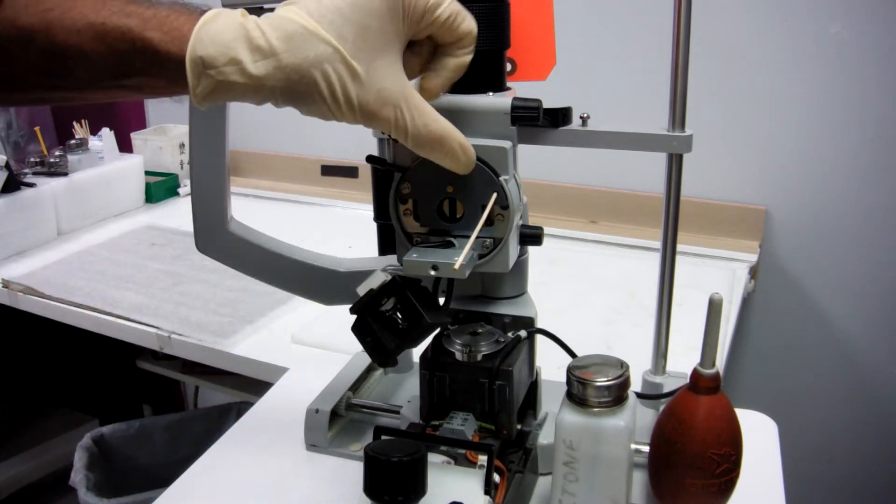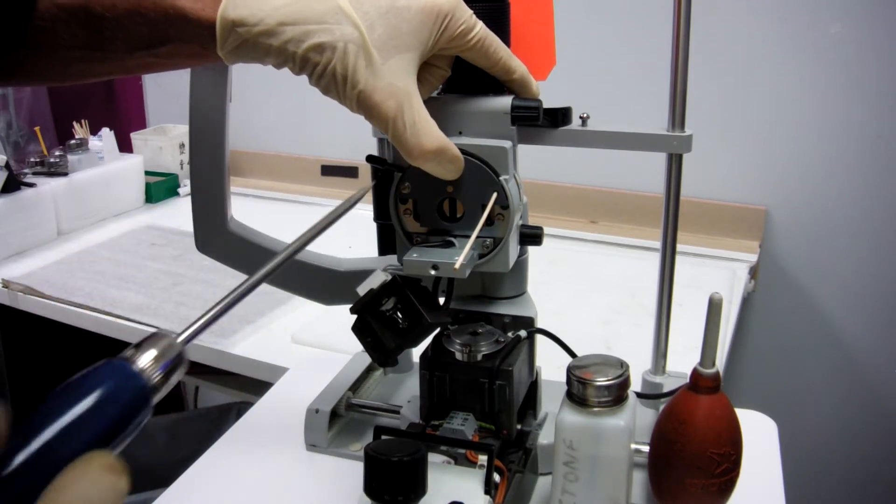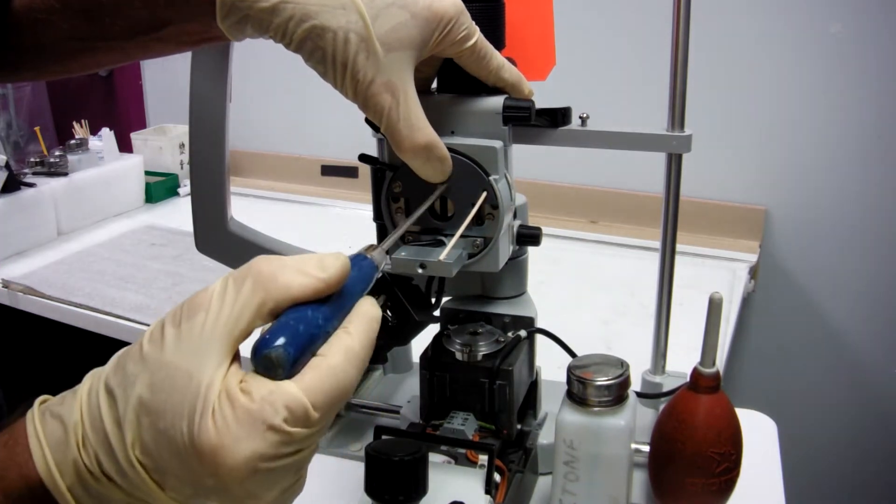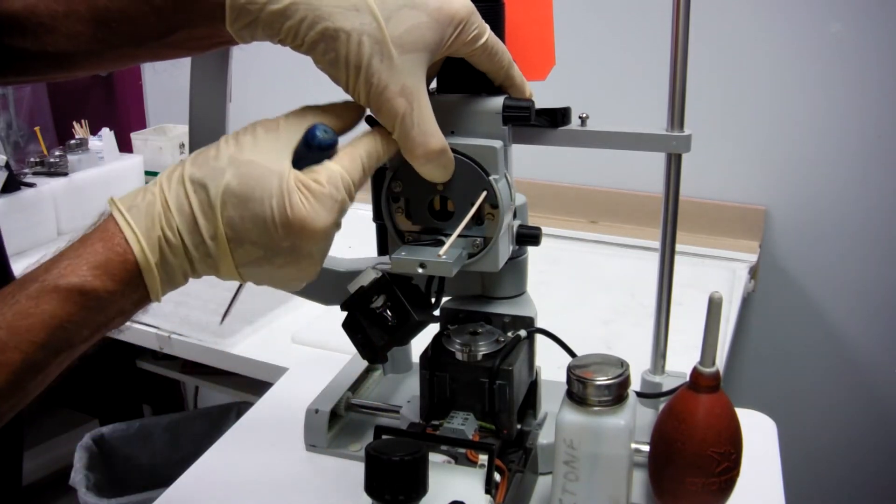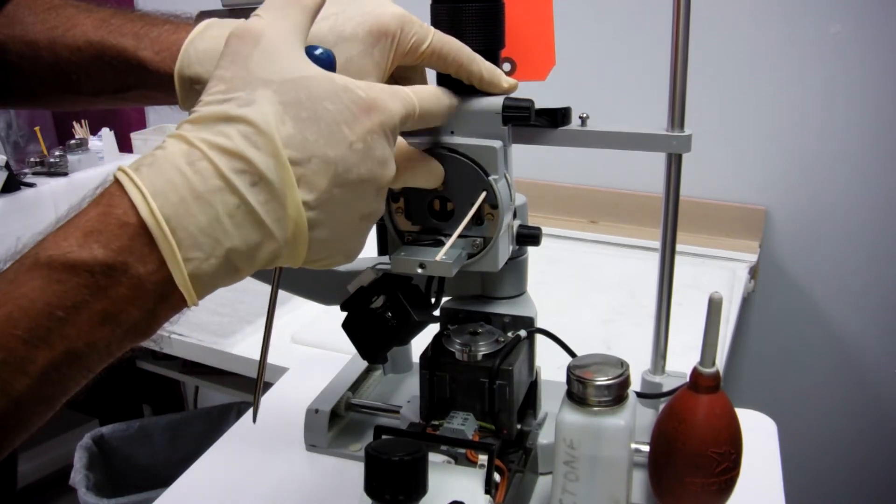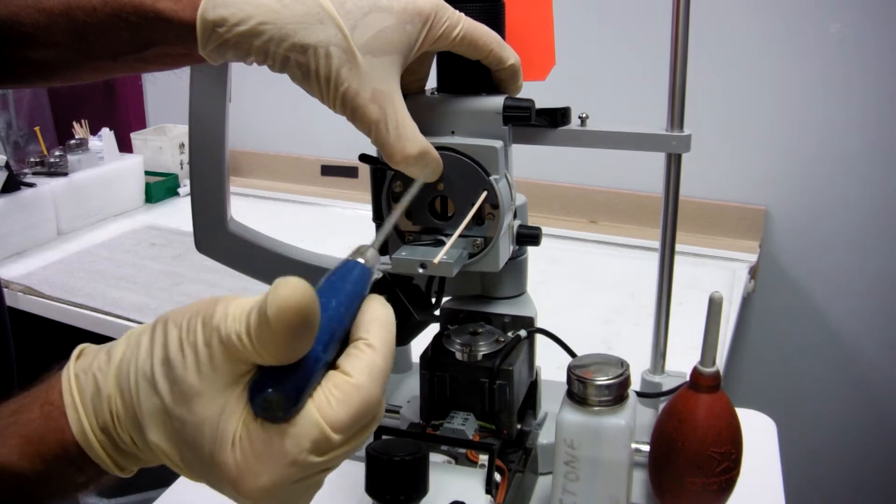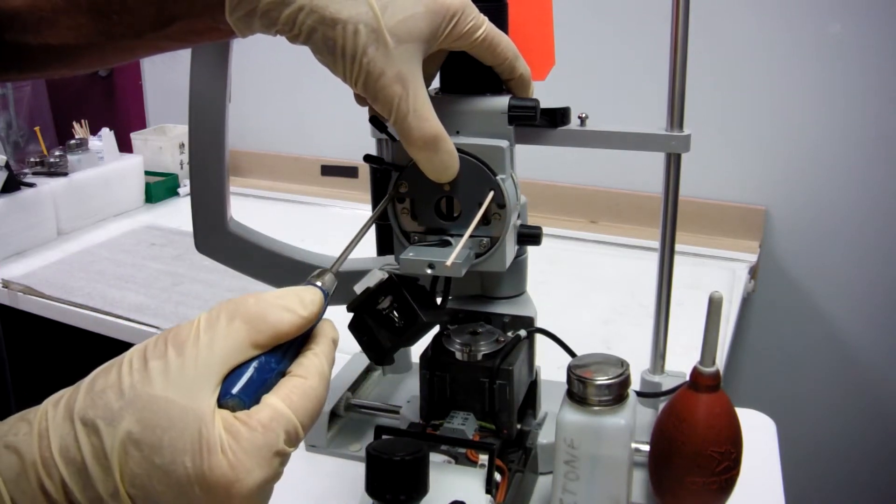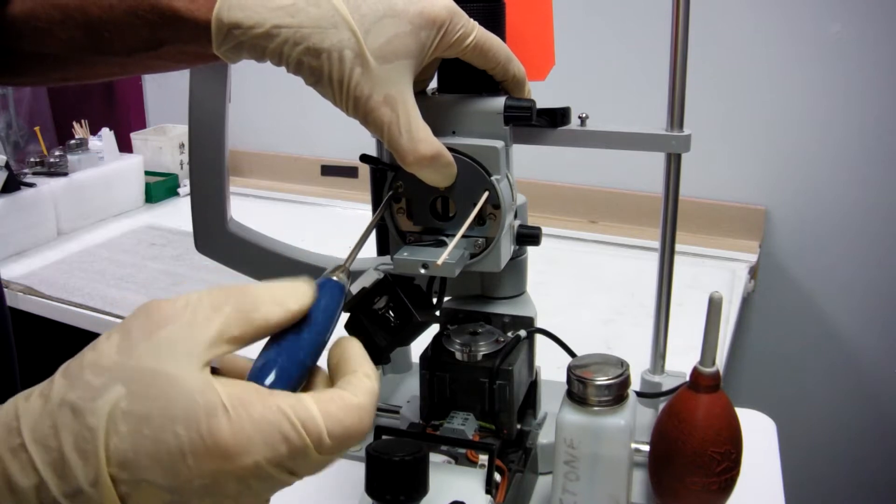Keep pressure on the assembly with your thumb because there's a bearing behind here that has a detent. There's a bearing, a spring and a bearing behind here. So I'm going to keep pressure on it while I loosen this side.